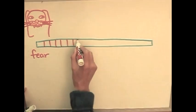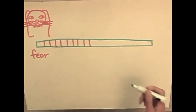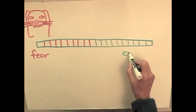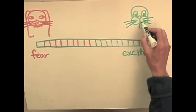Fear varies from extreme to moderate to mild. Excitement is at the other end. Excitement also varies from slight to moderate to extreme.